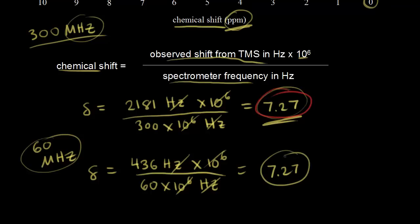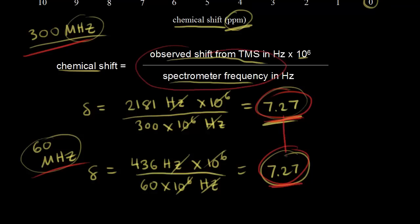Notice we get the same value as before. So 7.27 is a constant no matter what spectrometer you're using — whether it's a 300 megahertz or a 60 megahertz spectrometer, you get the same chemical shift value. That's why we go through this calculation: to get a constant value. The protons on benzene have a chemical shift of 7.27 ppm, and we'll talk much more about chemical shifts in the next few videos.